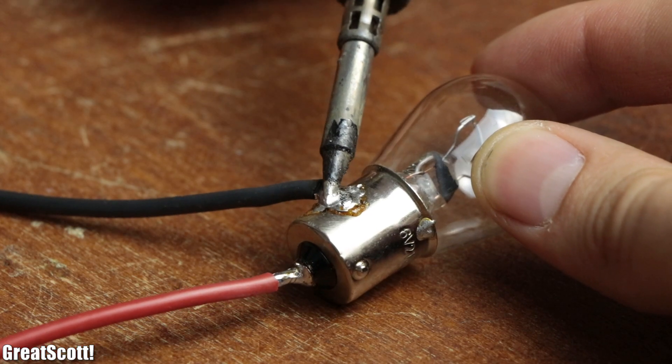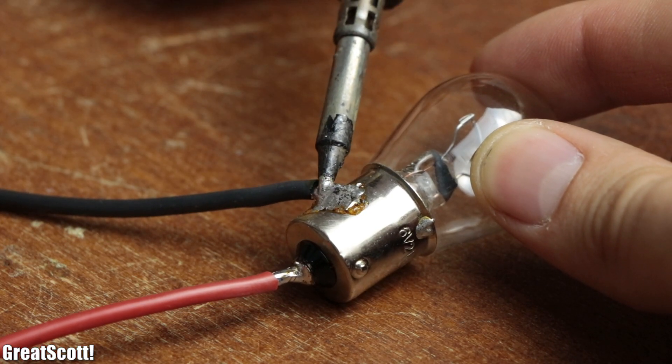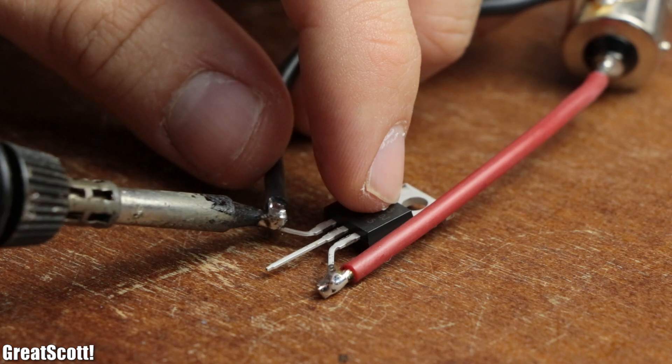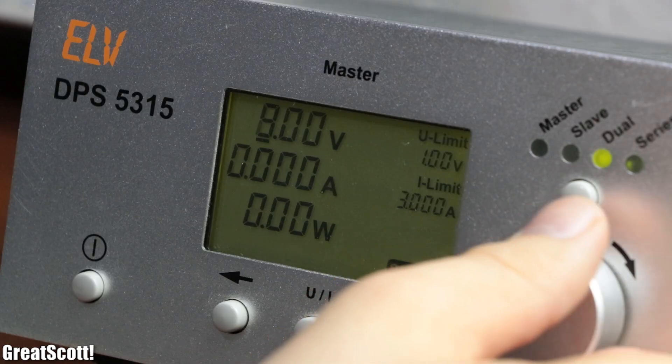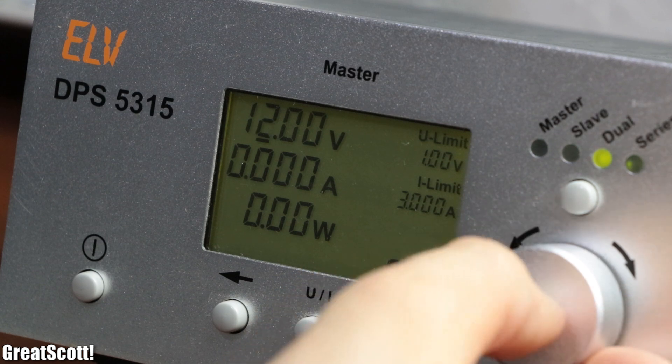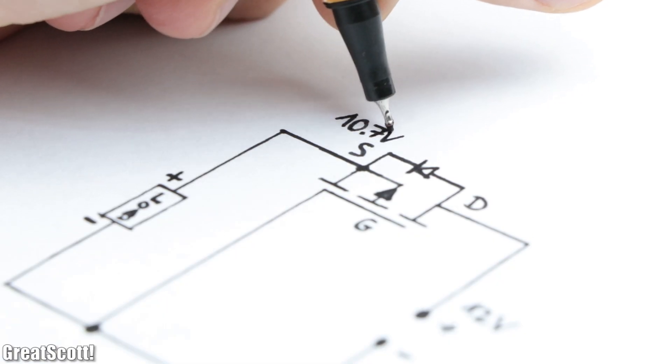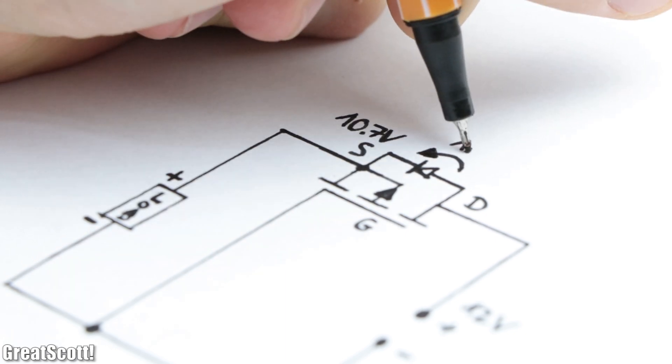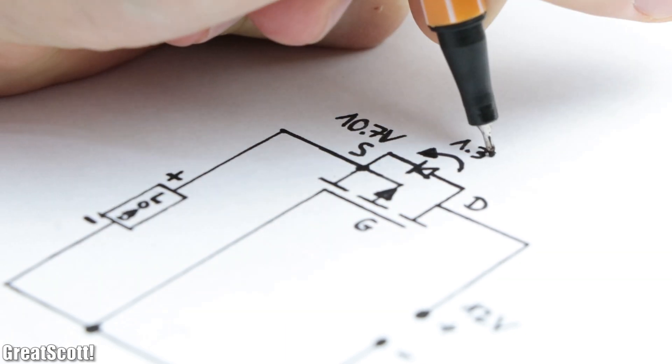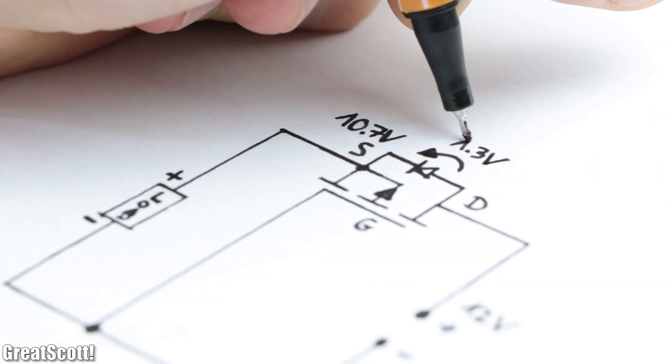As a first example, let's use a light bulb as a load instead of the battery to keep things simple. If the power source is connected properly and I'm using a voltage of for example 12 volts, then we got a voltage potential of 10.7 volts at the source because there is an initial voltage drop across the MOSFET's body diode of around 1.3 volts.